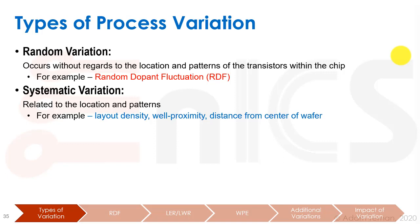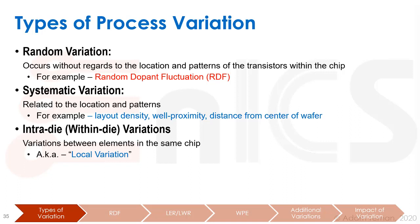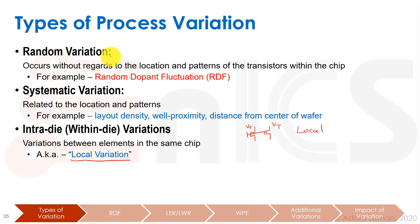We further change the categorization into two things: intra-die, or within-die variations — these are variations between elements in the same chip, and we call this local variation. So two transistors right next to each other on the same die may have different VT values, and that we call local variation. Most of the local variation is random, though some of it can be systematic.